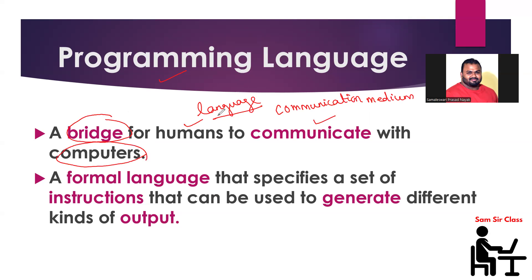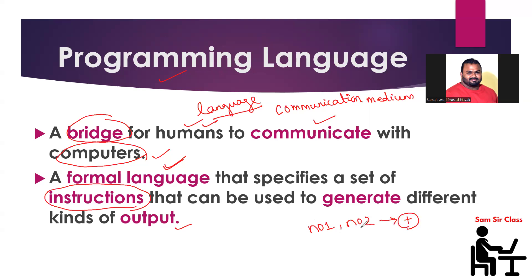So this programming language is nothing but a bridge between human beings and computers so that they can share their thoughts. Technically, a programming language is a formal language which specifies a set of instructions that can be used to generate different kinds of output. For example, suppose I need to add two numbers — I have to give instructions to the computer along with different types of inputs, which will give me the output.